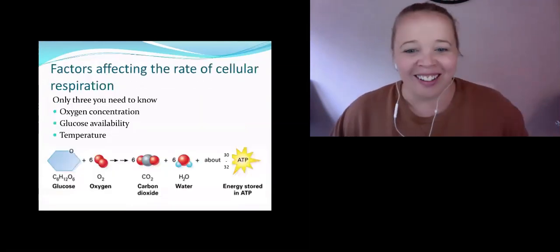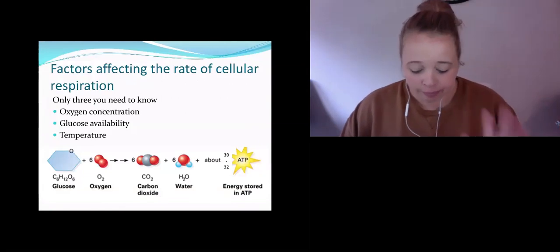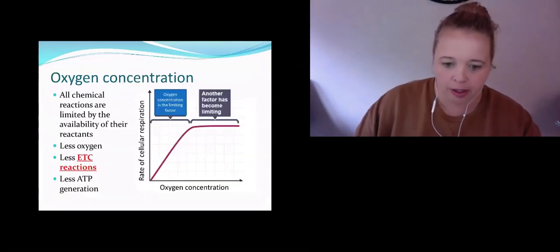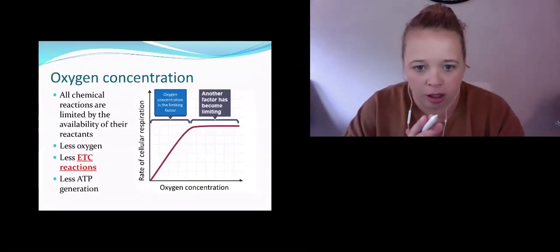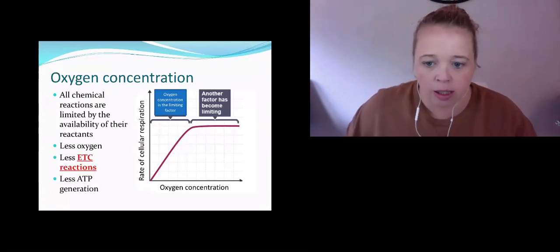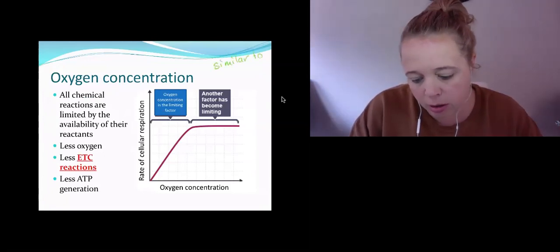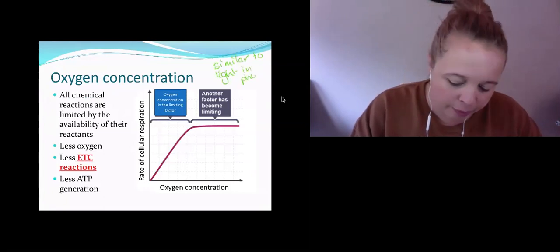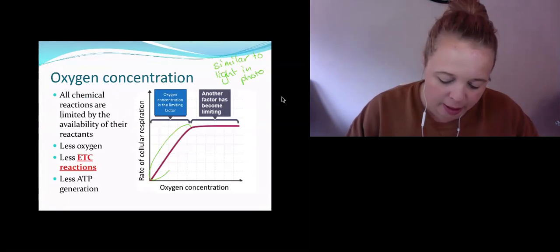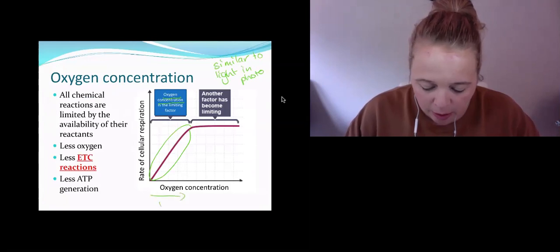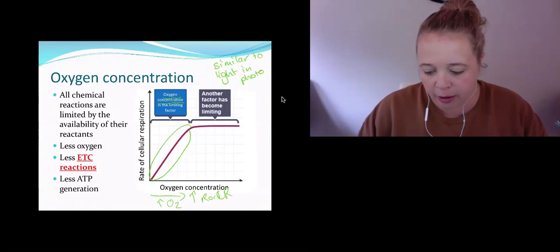So the three factors that we need to know that affect the rate of cellular respiration: oxygen concentration, glucose availability, and temperature. Oxygen concentration has a very similar graph to what we see with light in photosynthesis. Down in this section here, we have oxygen as a limiting factor. So as we increase the amount of oxygen, we increase the rate of cellular respiration. But then we get to this little plateau area up here.